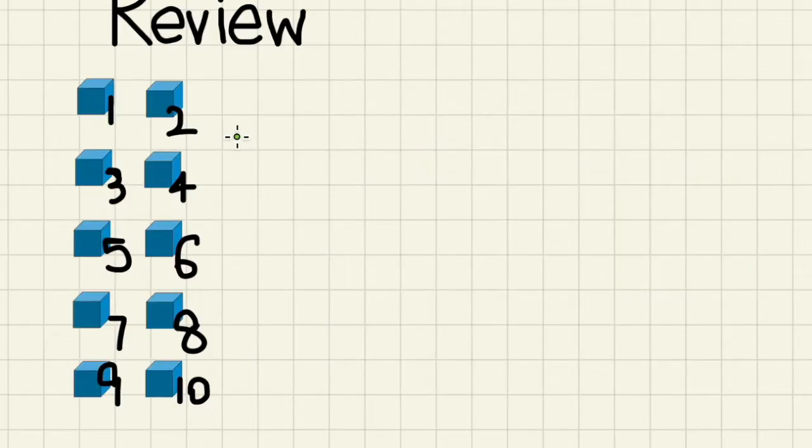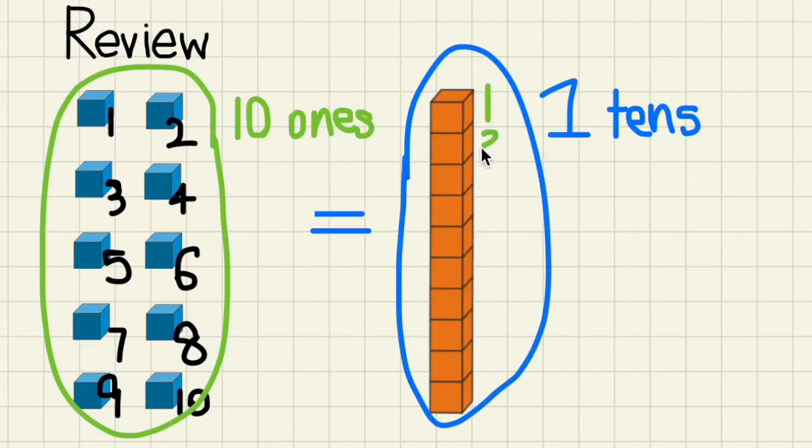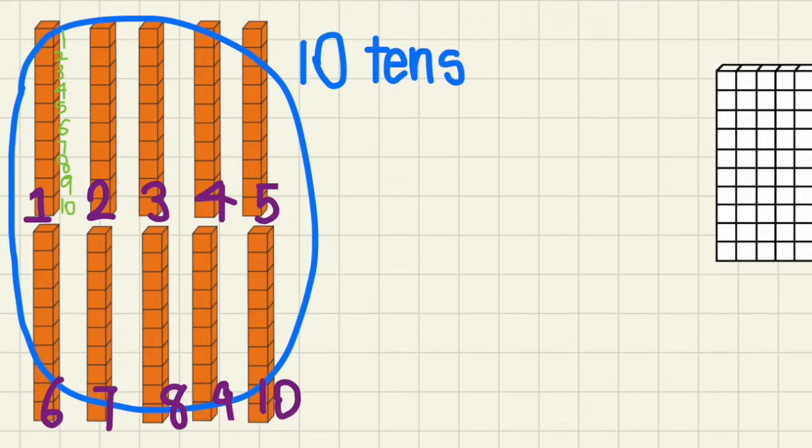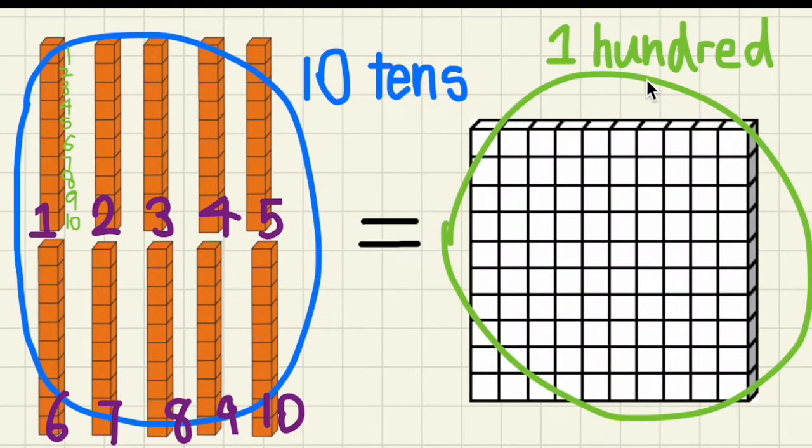Let's quickly do a review. You'll see 10 cubes on the screen and each cube is a representative of 1. So there are 10 ones and 10 ones equals to 1 ten. Each orange stack has 10 ones so that means that it is equal to 1 ten. And we have 10 of those so now we can call it 10 tens. And 10 tens is the same as 1 hundred.